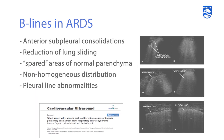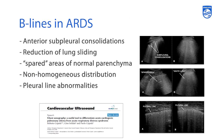Here you have an example on the right side of the screen at the top of where subpleural consolidations are seen below the pleura, and this is oftentimes a finding that you'll see in patients who have acute respiratory distress syndrome. These are images from that article in patients with ARDS, and you see the subpleural consolidations delineated by the arrow markers.